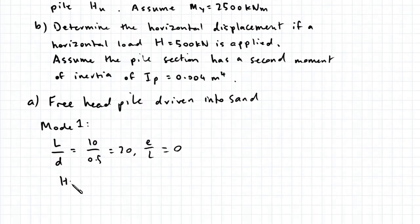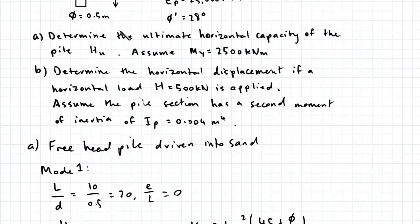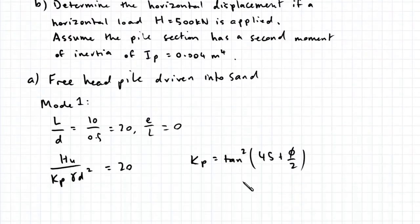So HU divided by KP gamma D squared is equal to 200, where KP is equal to tan squared of 45 plus phi on 2. Now if we go back here, our friction angle is 28 degrees, so this works out to be 4.204. So that should be 200.